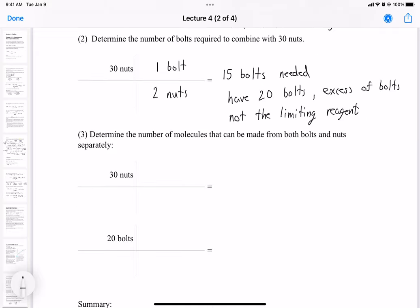Okay, so the other method, the last method we can do and the one I really like to highlight, is we can determine the number of molecules that can be made from both nuts and bolts. So we know that for every N2B molecule, it requires two nuts and one bolt. So for this equation here, for 30 nuts, we're going to say we need two nuts per one N2B molecule. So one N2B molecule. Okay, so in this case we can only produce 15 N2B molecules.